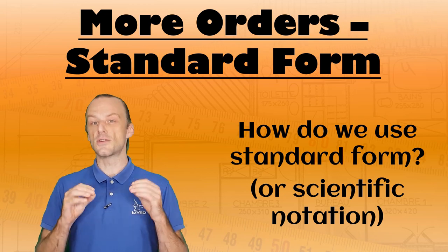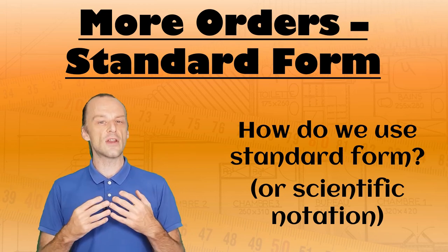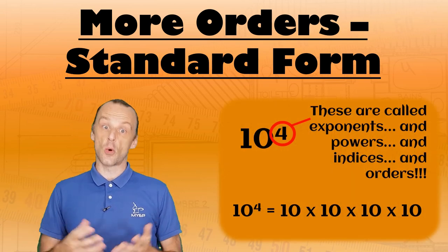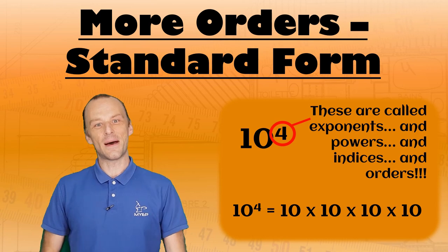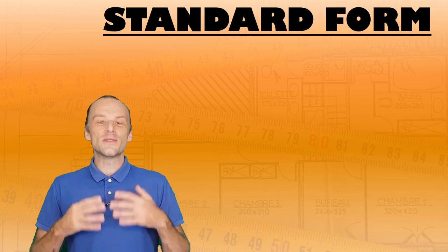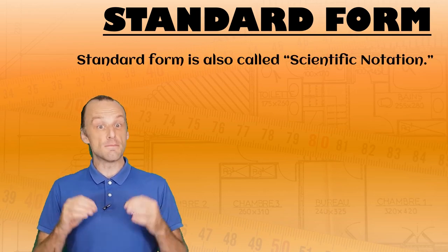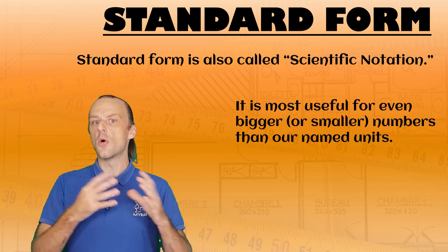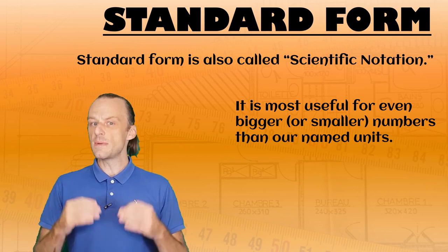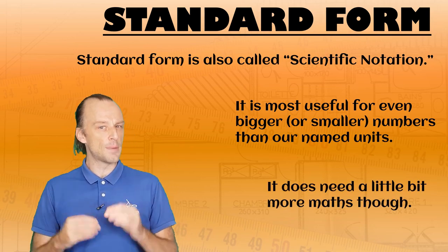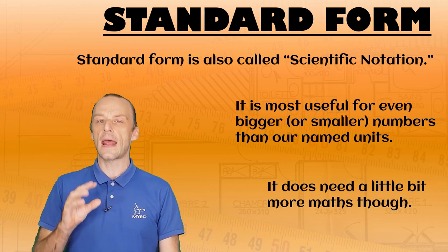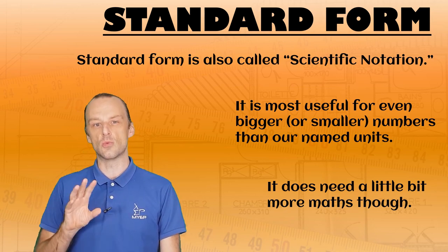It's called standard form, and to learn about this, you should have an idea about how exponents work, or powers, or indices, or orders. Why does this part of maths have so many names? I don't know. Standard form is also called scientific notation, and it's most useful for even bigger or smaller numbers than our named orders of magnitude from before. To be good at standard form, you do need a little bit more maths, but understanding it will make you be even clearer on how these orders of magnitude work together.